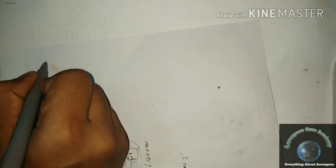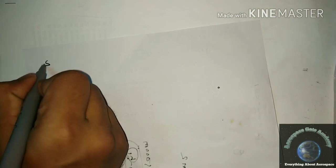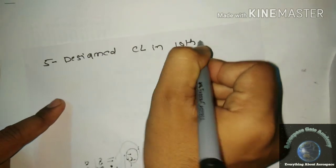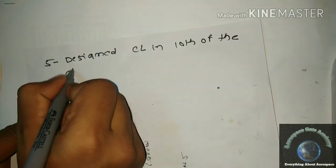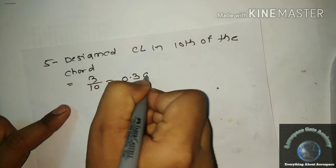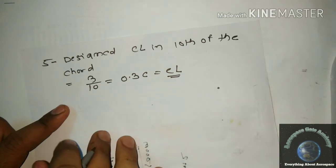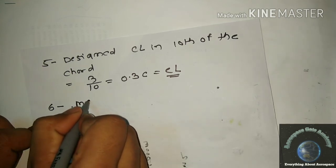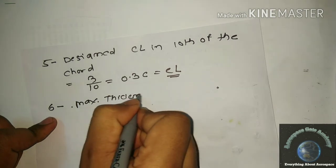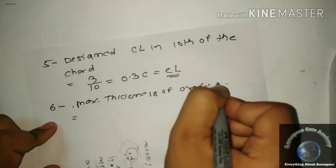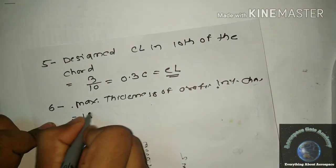The fifth digit gives the design lift coefficient in tenths of the chord. Digit 3 divided by 10 equals a design CL of 0.3. The last two digits, 15, give the maximum thickness of the airfoil — 15% of the chord, or 0.15C.